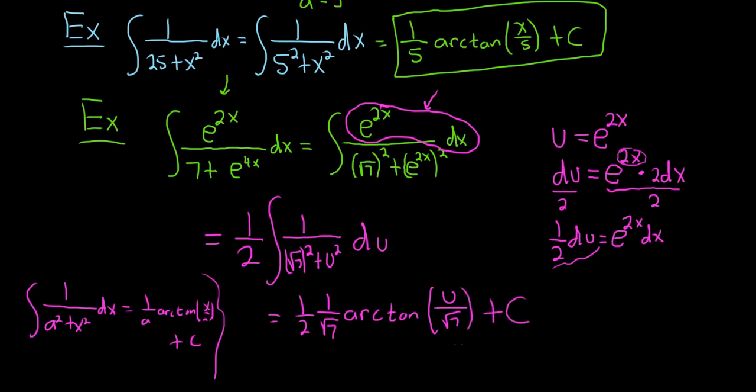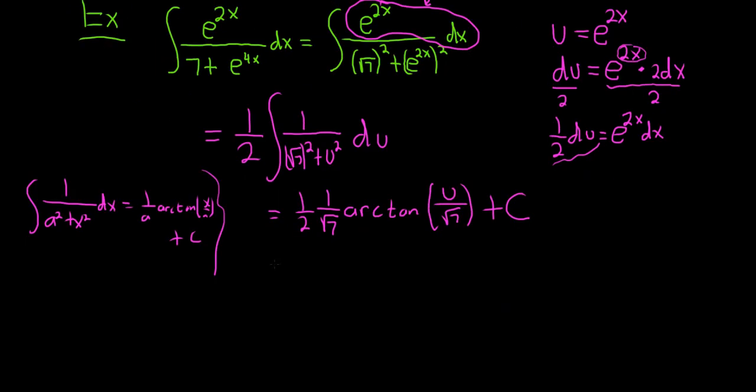So just directly applying the formula, it's 1 over a, arctangent of x over a. But instead of x, it's u, and our a is the square root of 7. The very last thing to do, maybe, is write this as 1 over 2 square root of 7, arctangent, and then u is e to the 2x. So this is e to the 2x over the square root of 7. And then we still have our plus and our capital C. So that, my friends, would be the final answer.